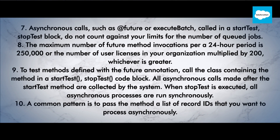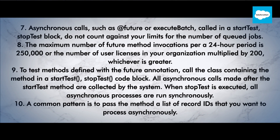6. No more than 50 future method calls per Apex invocation. 7. Asynchronous calls, such as @future or executeBatch, called in a startTest/stopTest code block do not count against your limits for the number of queued jobs. 8. The maximum number of future method invocations per Apex 24-hour period is 250,000, or the number of user licenses in your organization multiplied by 200, whichever is greater.